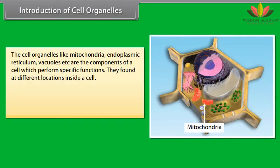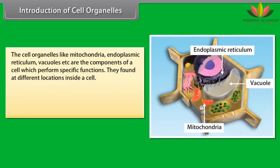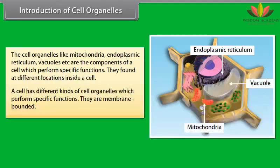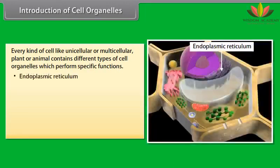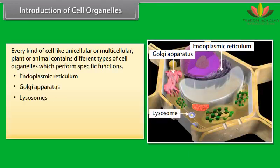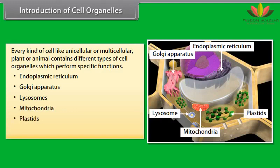The cell organelles like mitochondria, endoplasmic reticulum, vacuoles, etc. are the components of a cell which perform specific functions. They are found at different locations inside a cell. A cell has different kinds of cell organelles which perform specific functions and they are membrane bounded. Every kind of cell, whether unicellular or multicellular, plant or animal, contains different types of cell organelles. Endoplasmic reticulum, Golgi apparatus, lysosomes, mitochondria, plastids, and vacuoles are some examples of these cell organelles.